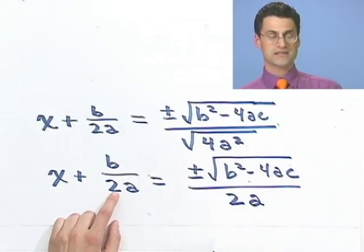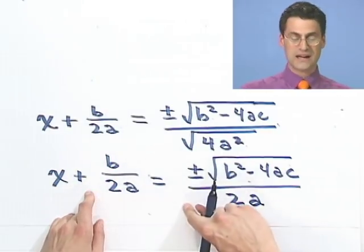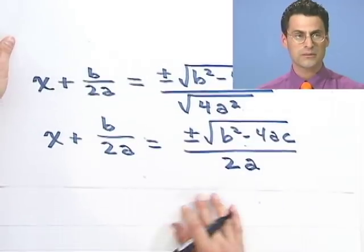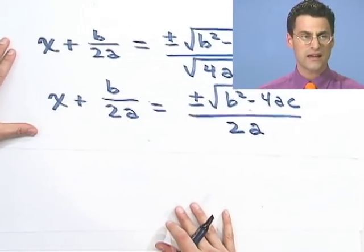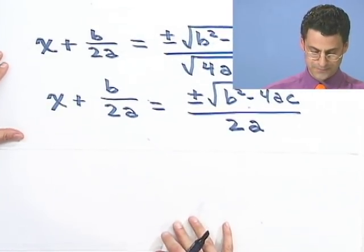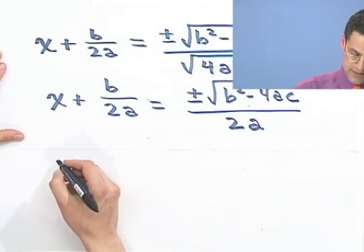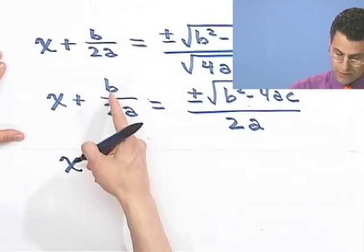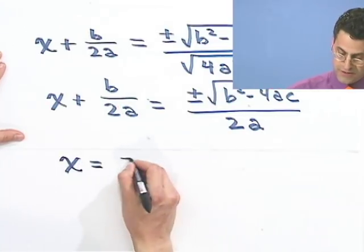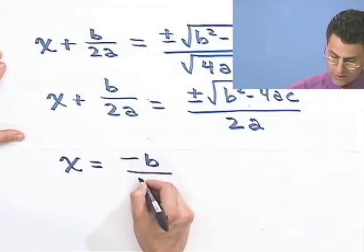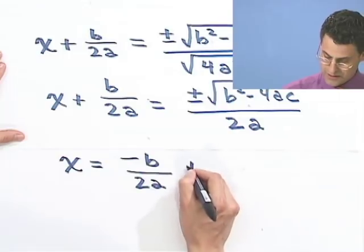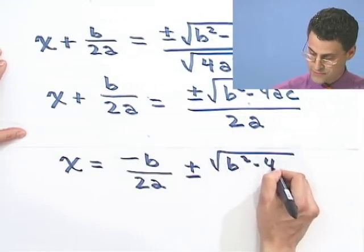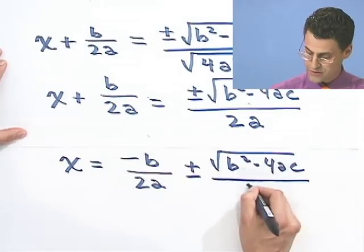I want x all by itself, so I'm going to bring this term over by subtracting. And when I subtract that term, what do I see? Well, if I subtract that term, let me lift this up so you can still see that last equation. That's all that matters right now. What I would see is x equals, well, I'm going to bring this over. It becomes a negative.